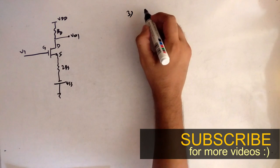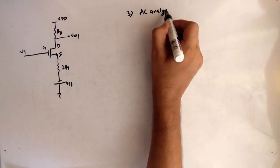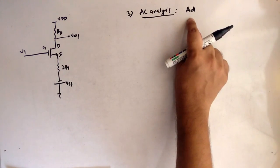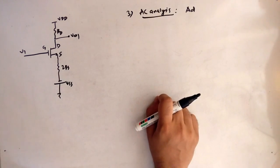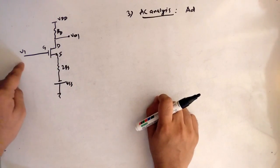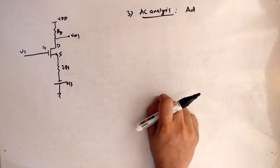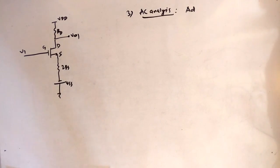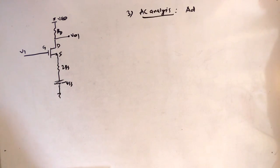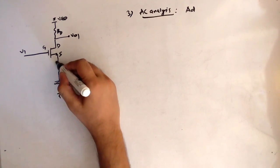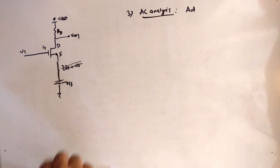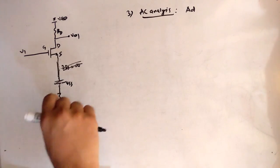The third part is to find the AC analysis. In AC analysis we will find the parameter AD, which stands for differential gain. Now looking at the circuit, we have input as V1 and output as VO1 for MOSFET1, and V2 and VO2 for MOSFET2. For AC analysis, all DC voltages are treated as ground, and RS is assumed to be infinity, acting as a short circuit, so RS vanishes.